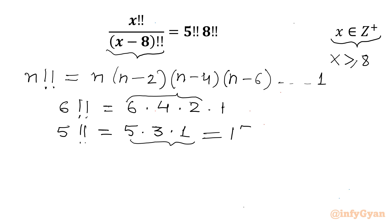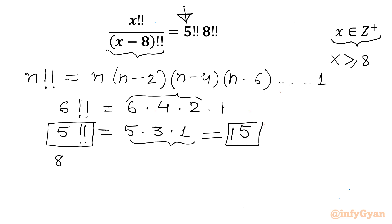Let me write 5 double factorial value. It is 5 times 3, which is 15. This I will use in our right-hand side. Let's calculate 8 double factorial also: 8 times 6 times 4 times 2, which will be 48 times 8, giving 384.